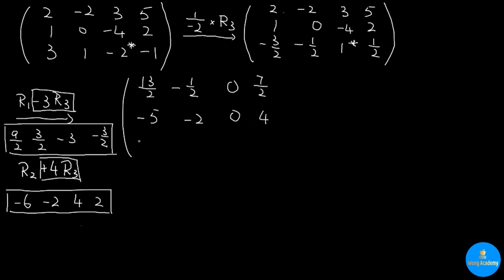The last row R3 is the pivot row and is not changed, so we copy it down. This completes our pivoting, because we successfully turned the pivot entry negative 2 into a 1, and all other entries in the pivot column are 0. If you like our video, please subscribe to our channel and we will learn more fun math together. Thank you for watching.